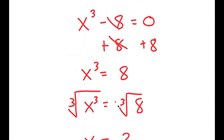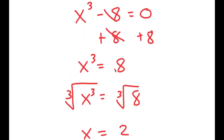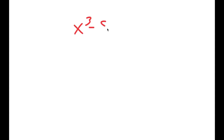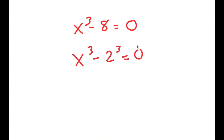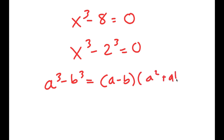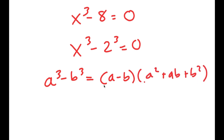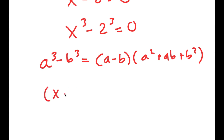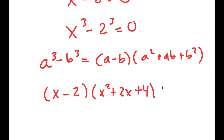But actually, there are more than one solution to this equation. I'm going to rewrite the equation as x to the power of 3 minus 8 equals 0, and rewrite 8 as 2 to the power of 3, so I get x to the power of 3 minus 2 to the power of 3 is equal to 0. Now I'm going to use the formula a cubed minus b cubed equals a minus b times a squared plus ab plus b squared. This turns into x minus 2 times x squared plus 2x plus 4 is equal to 0.